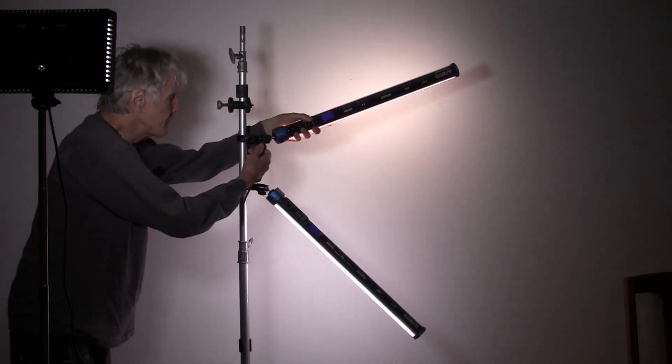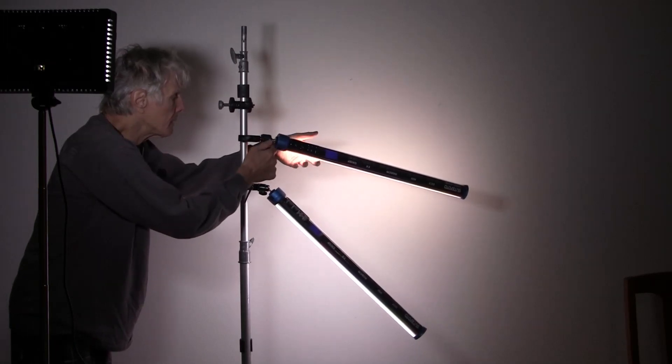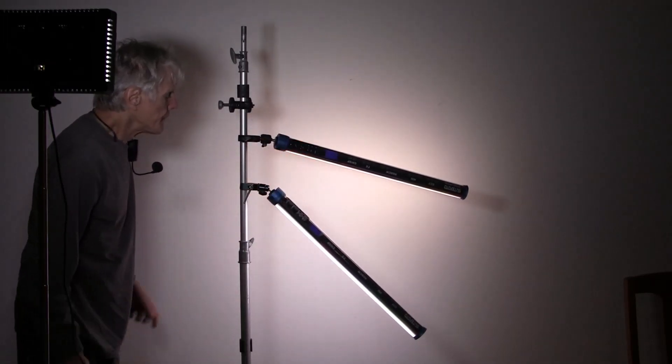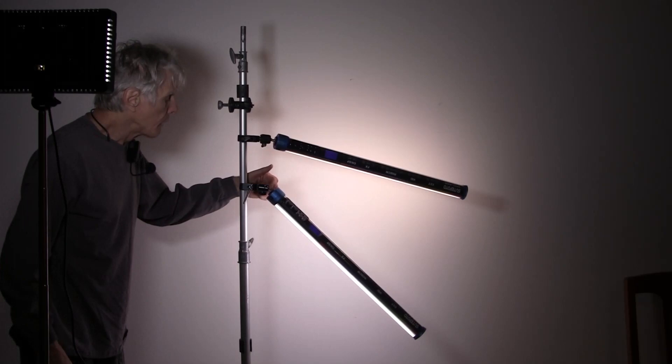Whereas the Ulanzi, I can put it pretty much anywhere I want it. And there it is. Maybe because the ball is larger on the Ulanzi and smaller on the Small Rig.